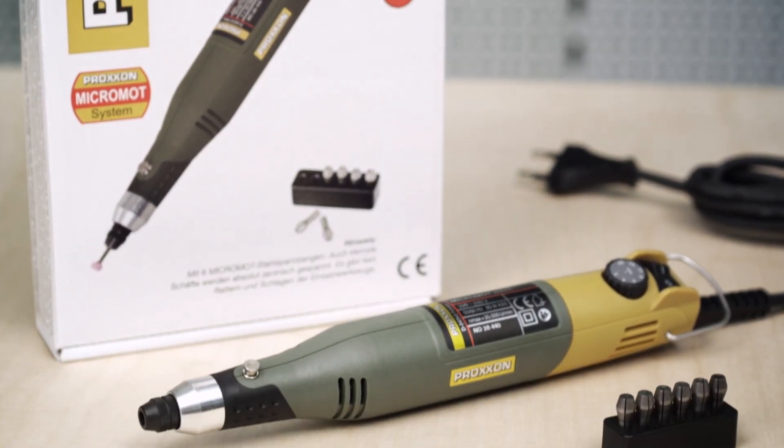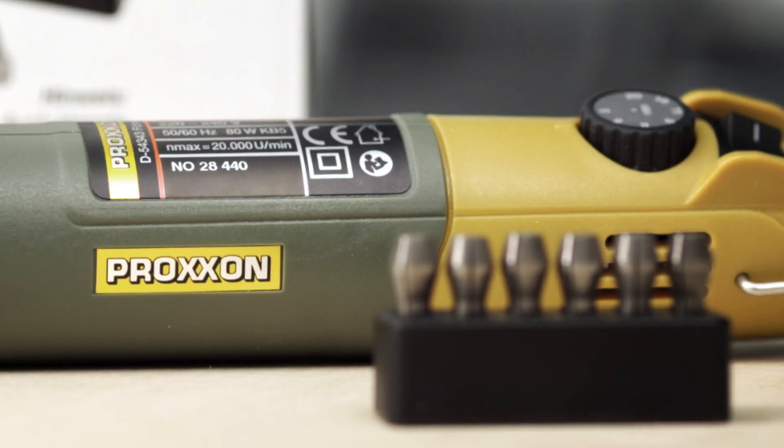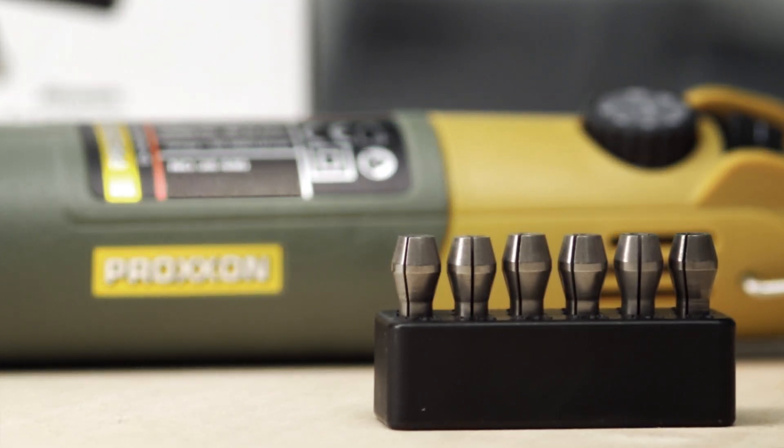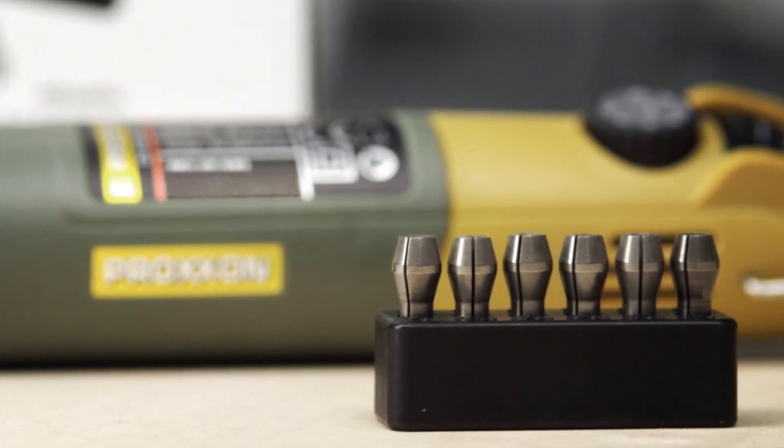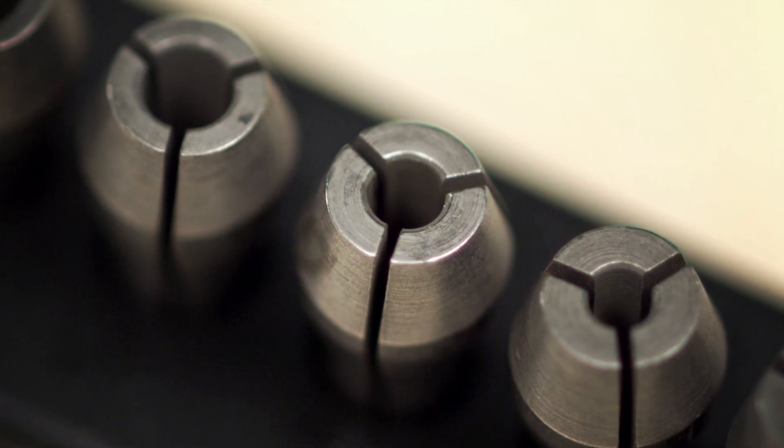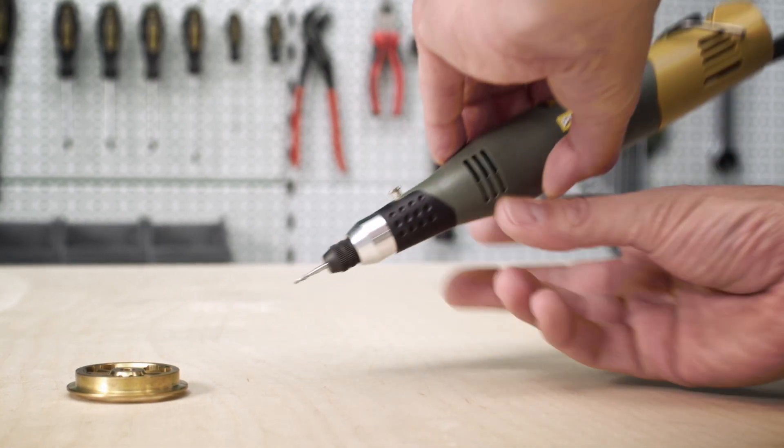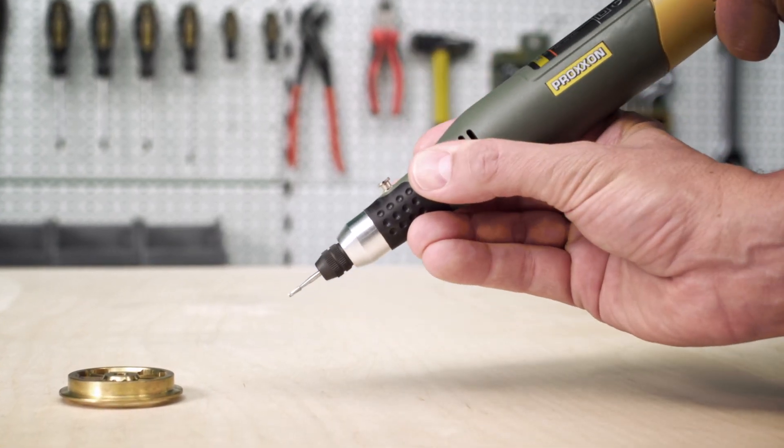Included is a set of six high precision collets which are suitable for use with a variety of accessories. Our special hardened steel collets have triple slits. This provides maximum support and optimal concentric accuracy of the bits and cutters.